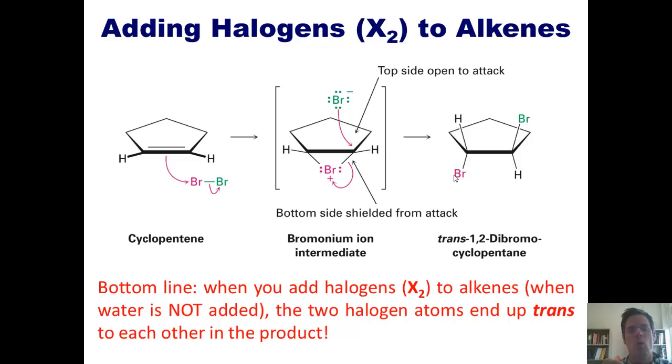So the bottom line is, when you add halogens, chlorine, bromine, iodine, to alkenes, not in the presence of water, I end up placing a halogen atom on each of the two formerly doubly bonded carbons, and the halogen atoms always end up trans to each other in the product.